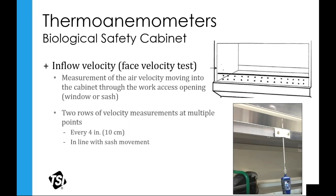The other application for thermoanemometers with bio cabinets is inflow velocity. You can use a thermoanemometer — different bio cabinet manufacturers have attachments that clamp onto the sash in front, where you mount the hot wire probe and calculate inflow velocity into the cabinet. So for biosafety cabinets with a hot wire thermoanemometer, you use it for both inflow velocity coming into the cabinet and downflow velocity from the HEPA filter at the top.